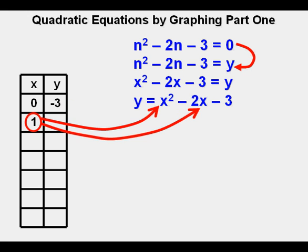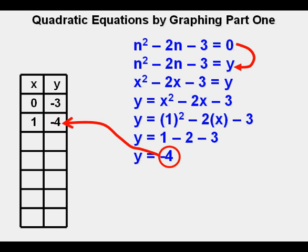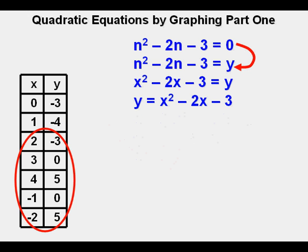He places the -3 into its place in the table. He now selects an input value of 1. Here is 1 plugged in. Here we have 1 - 2 - 3. For x = 1, y = -4. Negative 4 goes into the table here. Joe repeats the process for some more input values. This is what he gets for all the shown inputs.